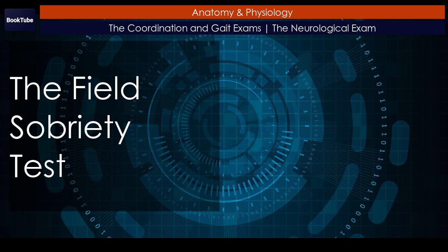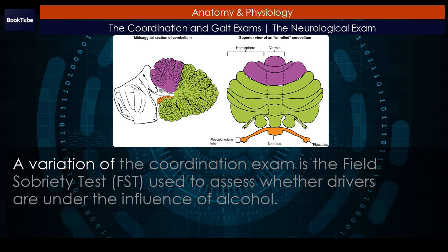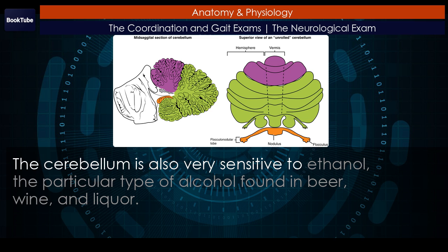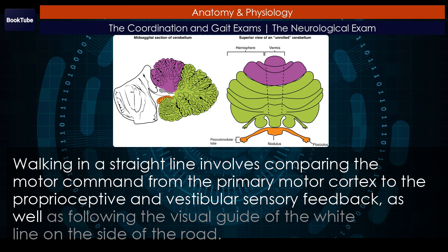Everyday connections: the field sobriety test. The neurological exam has been described as a clinical tool throughout this chapter, but it is also useful in other ways. A variation of the coordination exam is the field sobriety test (FST), used to assess whether drivers are under the influence of alcohol. The cerebellum is crucial for coordinated movements such as keeping balance while walking or moving appendicular musculature on the basis of proprioceptive feedback. The cerebellum is also very sensitive to ethanol, the particular type of alcohol found in beer, wine, and liquor. Walking in a straight line involves comparing the motor command from the primary motor cortex to the proprioceptive and vestibular sensory feedback, as well as following the visual guide of the white line on the side of the road.